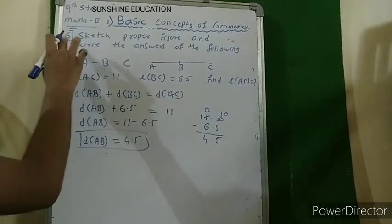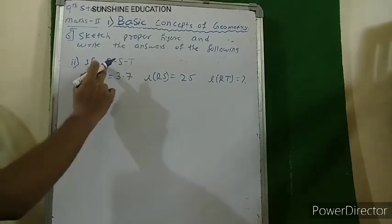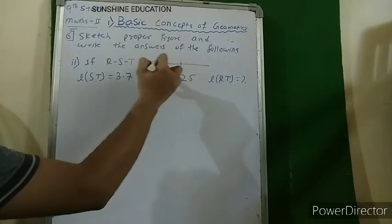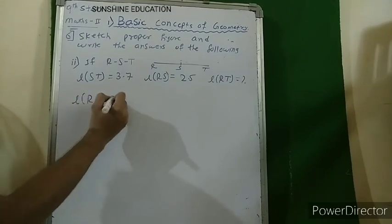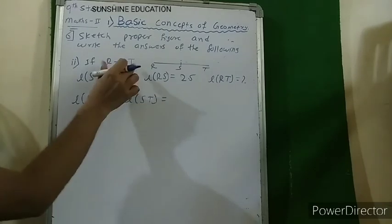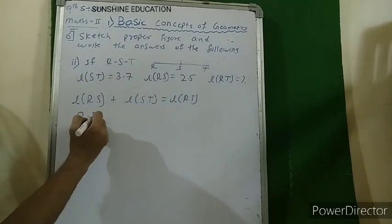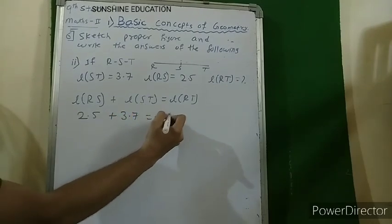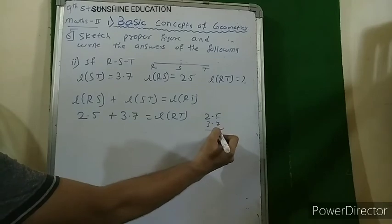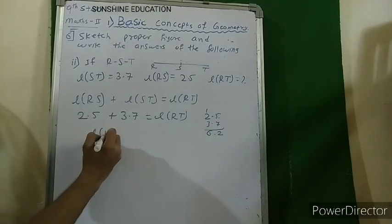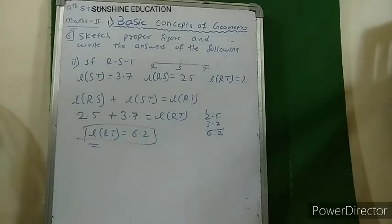Second part of question 6: S lies between R and T. Sketch: R — S — T. Length RS + length ST = length RT. RS = 2.5 and ST = 3.7. Adding: 5 + 7 = 12, so 2.5 + 3.7 = 6.2. Therefore length RT = 6.2.